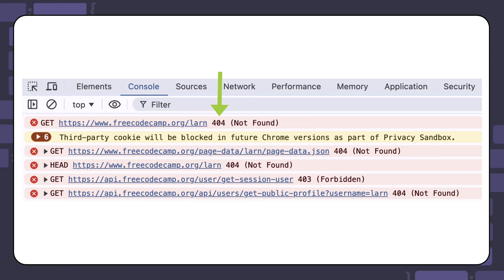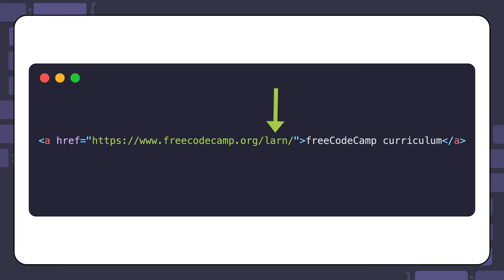The 404 error indicates that the page is not found. This lets us know that the issue is with the URL in the anchor element. When you inspect the href value, you will see that there is a typo. Right now it says forward slash learn, but the correct URL should be forward slash learn. When the link is corrected, then it will work as expected. You will learn more about working with the developer tools throughout the certification, but this is just a short example on how it can help you debug your code.